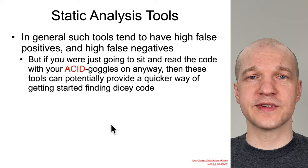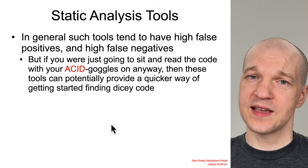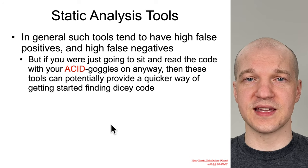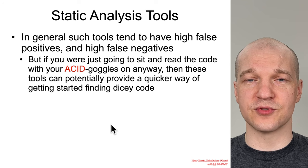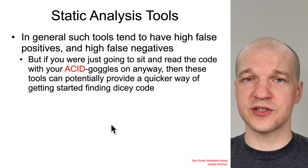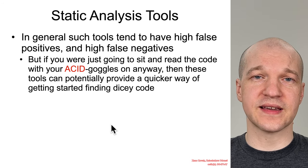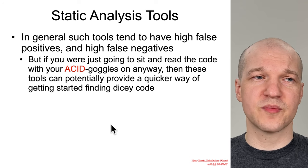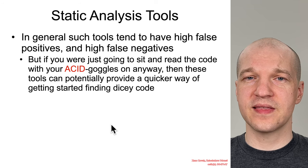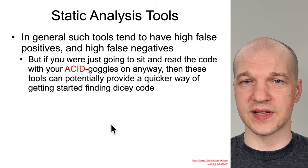The fact of the matter is if you were just going to sit around and read the code with your acid goggles anyway, then it benefits you to start from the particular hits that a given static analysis tool may give you. It'll give you ins with the source code for places where there are potential errors. Typically static analysis tools are going to find things like attacker-controlled input coming in from environment variables, over the network, or over the file system, and then look for acid sinks like mem copies, string copies, etc.